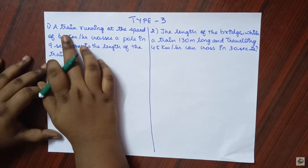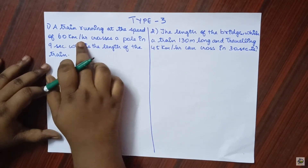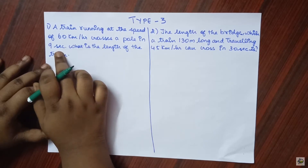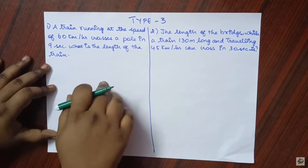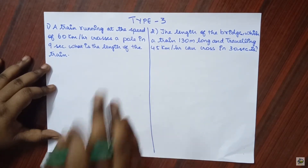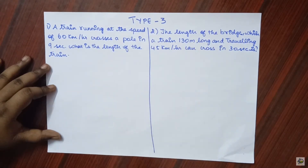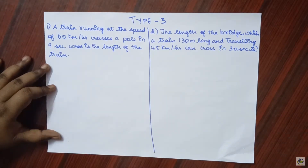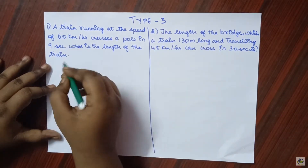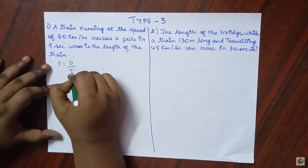Here the question is: a train running at the speed of 60 kilometers per hour crosses a pole in 9 seconds. What is the length of the train? We have to find the length of the train. As we learned in the previous video, when a train crosses a pole, the length of the train is the distance covered. So here the length of the train is nothing but the distance covered. Using the formula: speed equals distance divided by time taken.